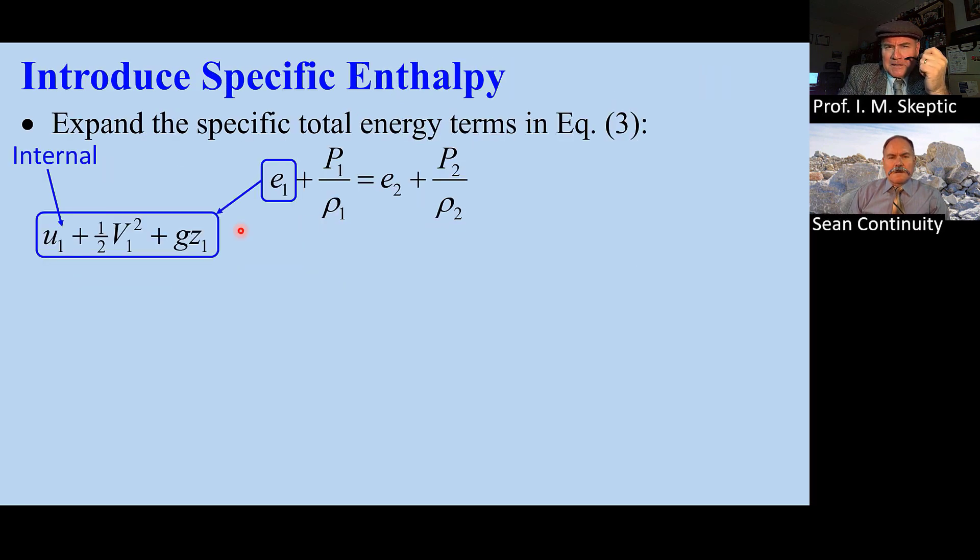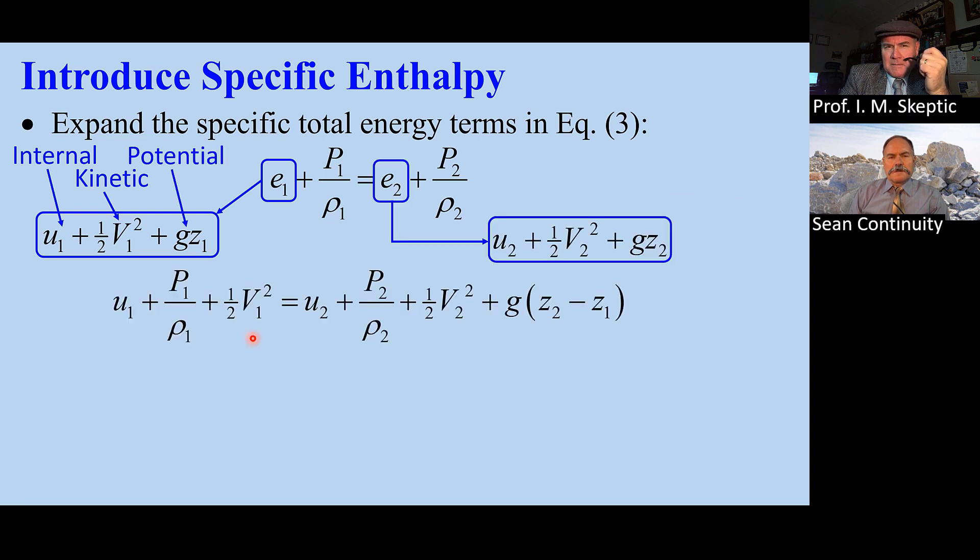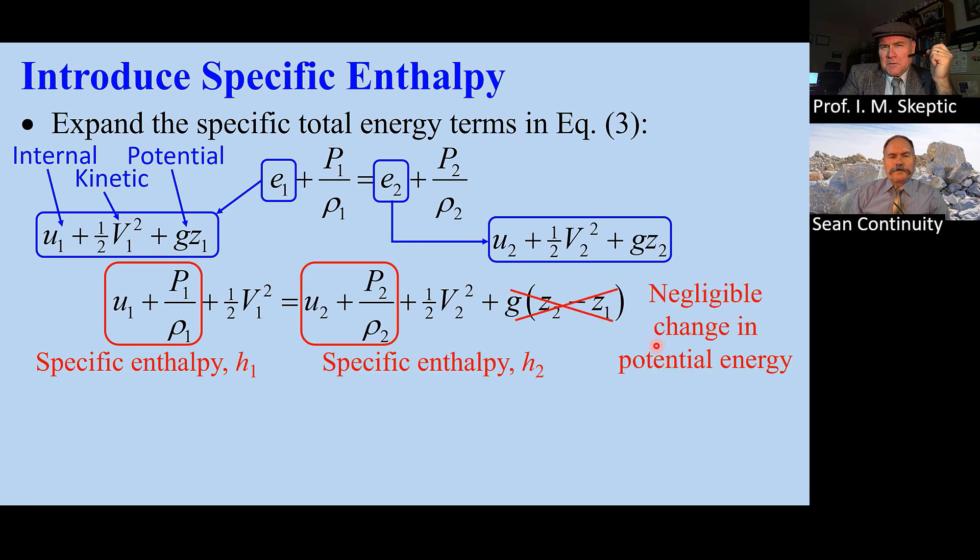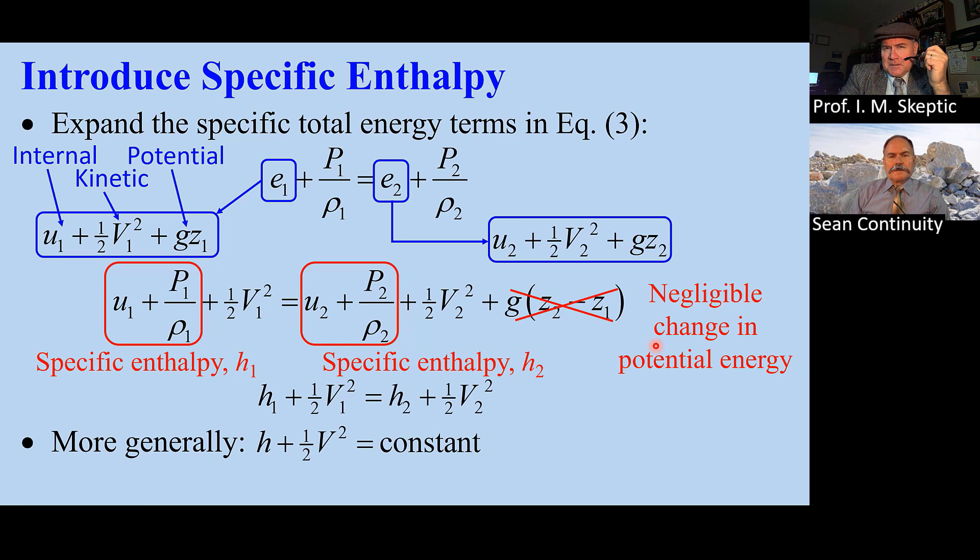Now we expand the total energy. E consists of internal, kinetic, and potential energies. We do the same at the outlet. Here's our expanded equation. This is specific enthalpy at the inlet and outlet. For gases, we can ignore potential energy. Our equation reduces to this, where h + ½V² is a constant.